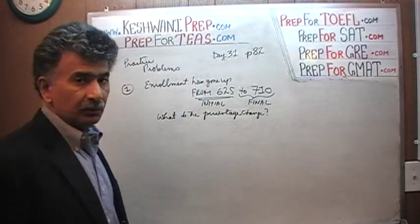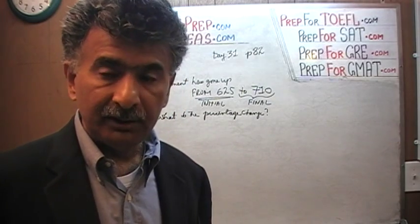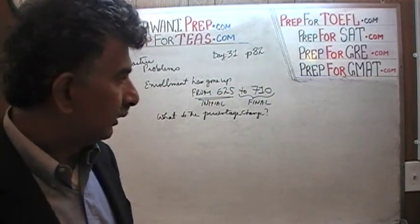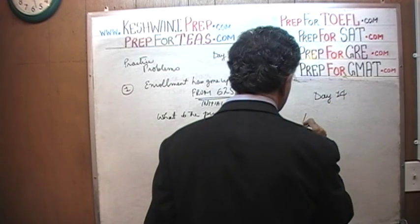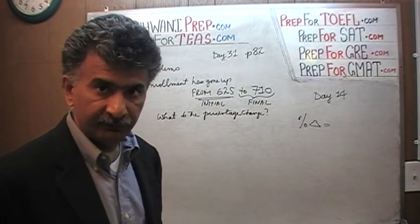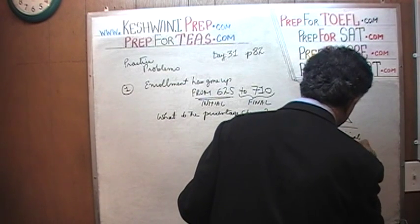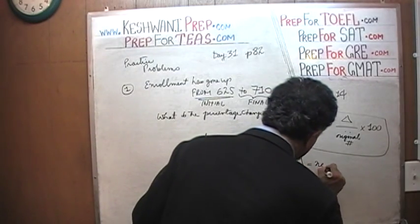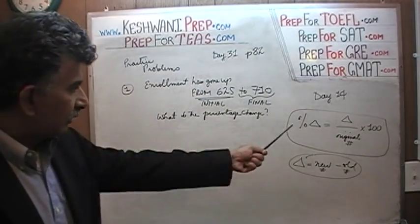I'm not going to redo everything we've already learned. You must watch these videos in proper sequence from day number 1. On day number 14, we discussed the concept of percentage change. We said that percentage change — this delta means change, not the friendly skies — is equal to the change divided by the original number, times 100. And change is defined as new minus old. That's how we define the change, and that's what we'll use here.